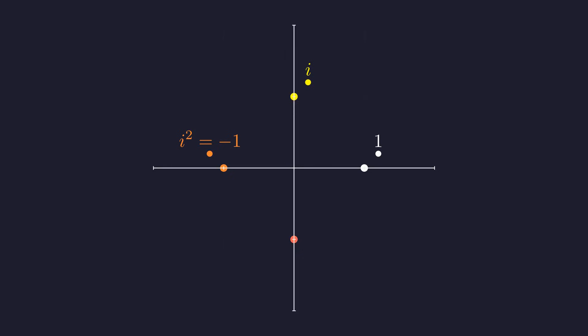And we land down here on the negative imaginary axis. This is negative i. The geometry makes it crystal clear. i cubed is definitely not i. It's negative i.